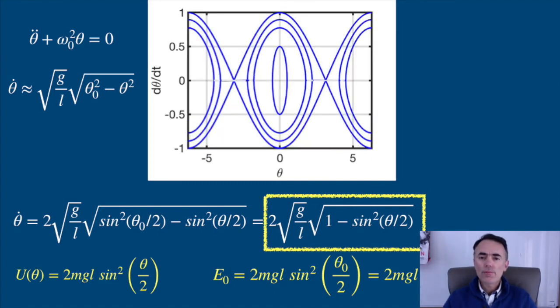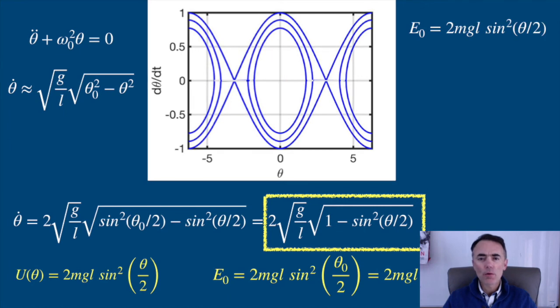In this phase space, we see that the energy is smaller than 2mgl. We can say that the system is bound in a potential well. The positions of theta zero, theta two pi, theta negative two pi are stable equilibrium points.